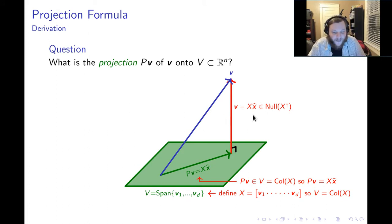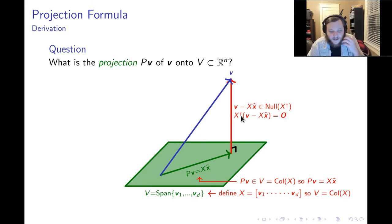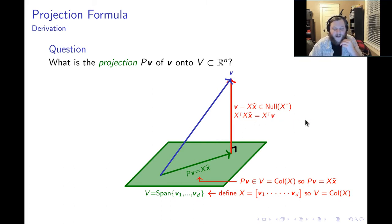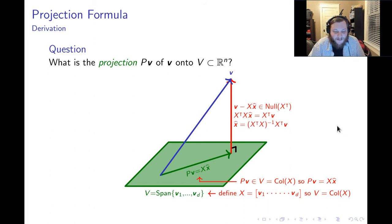Since the difference vector is in the null space, when I multiply by X transpose I must get the zero vector. So X transpose multiplied by the difference V minus X times x-hat must equal zero. I can clean this up by distributing X transpose and simplifying, which gives me X transpose X times x-hat equals X transpose times V. Look who showed up to the party — it's X transpose X, and that's the Gramian of X. Now I'm going to solve for x-hat by inverting X transpose X and moving that to the right-hand side.